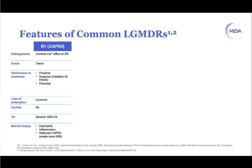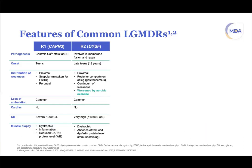Calpain (LGMDR1) involves calcium efflux regulation across the sarcoplasmic reticulum. Onset is typically in the teens. It can have prominent scapular winging in addition to proximal muscle weakness. CK is elevated at several thousand. The muscle biopsy is dystrophic and may show inflammatory cells. Decreased calpain protein can be shown on western blot, though this is not fully specific as other conditions can secondarily reduce calpain protein.